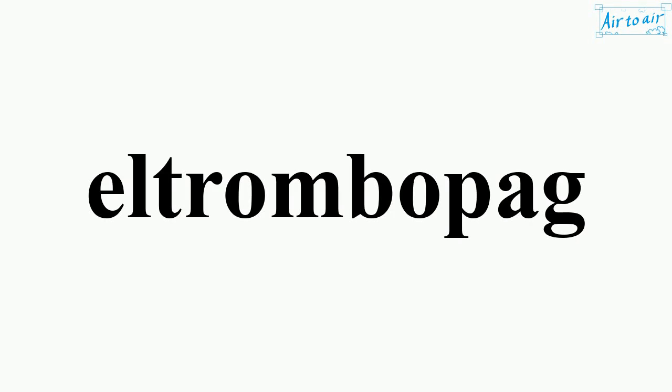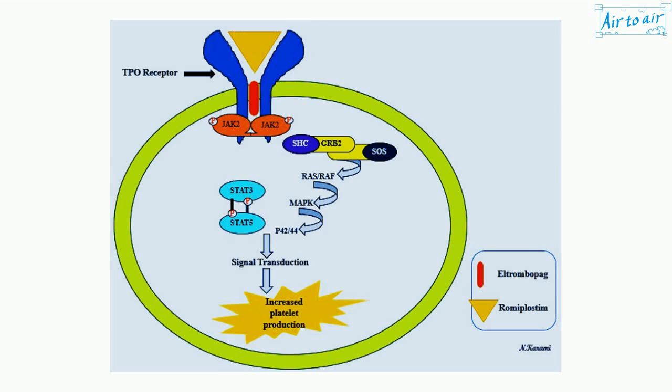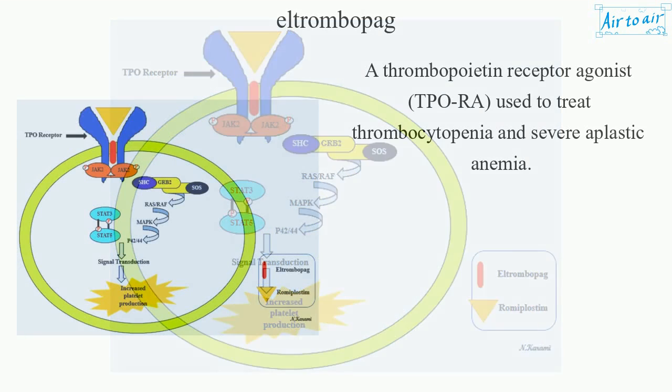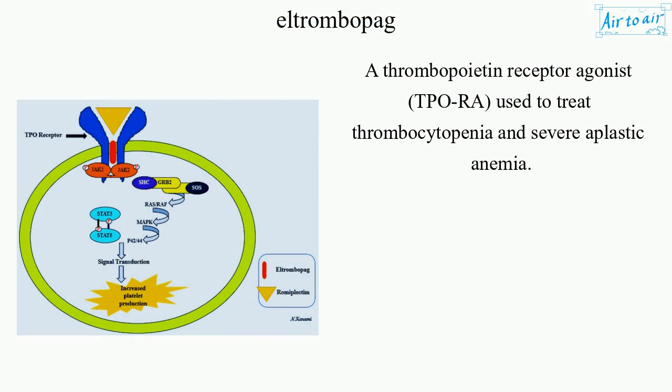L-Thrombopag is a thrombopoietin receptor agonist, TPO-RA, used to treat thrombocytopenia and severe aplastic anemia.